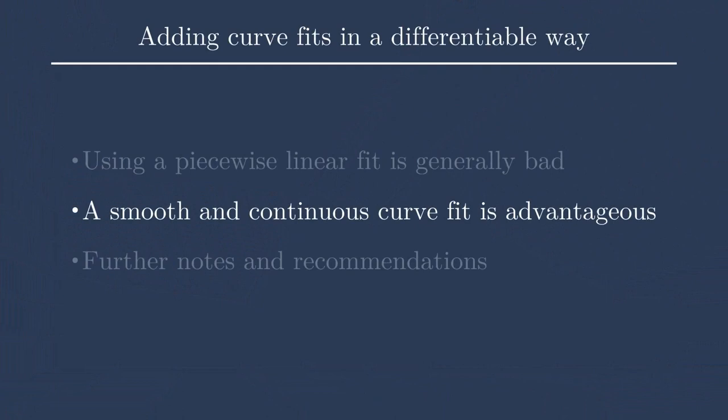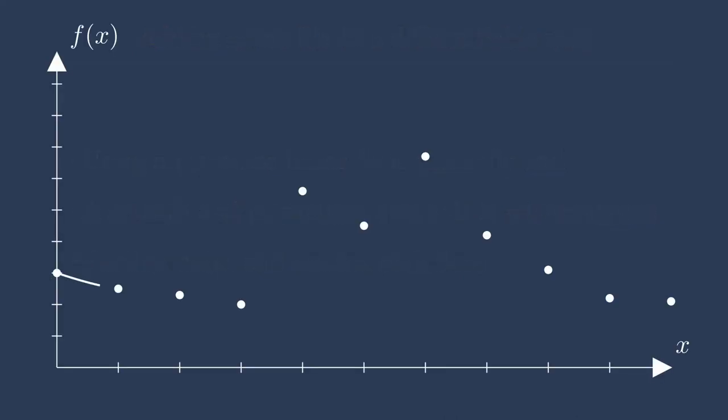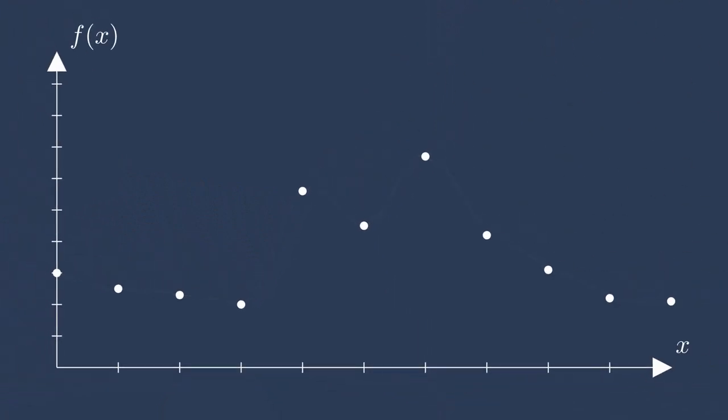So instead, I suggest using a smooth and continuous curve fit. There are many different non-linear spline and non-linear differentiable curve fits that you can use. Here for this example, we happen to be using the Akima curve fit. As you can see, when we sweep from left to right now, the derivative changes very smoothly. That nice tangent line changes in a continuous way. Let's take a look at what this means in an actual optimization though.